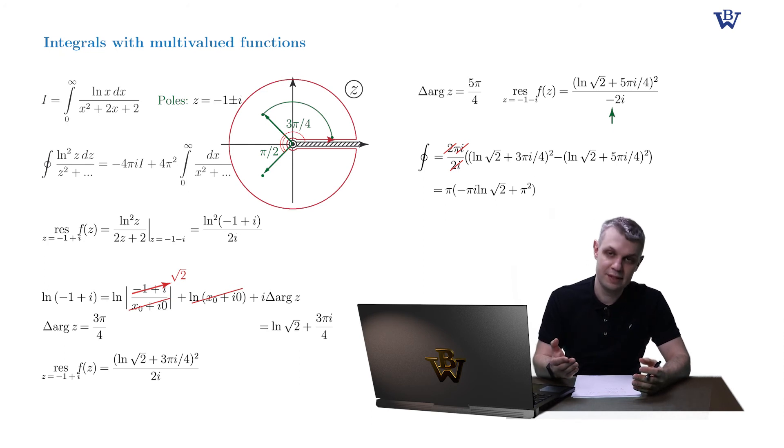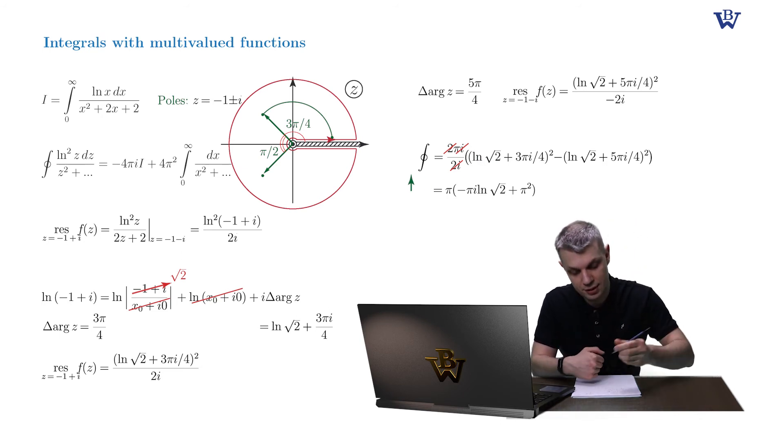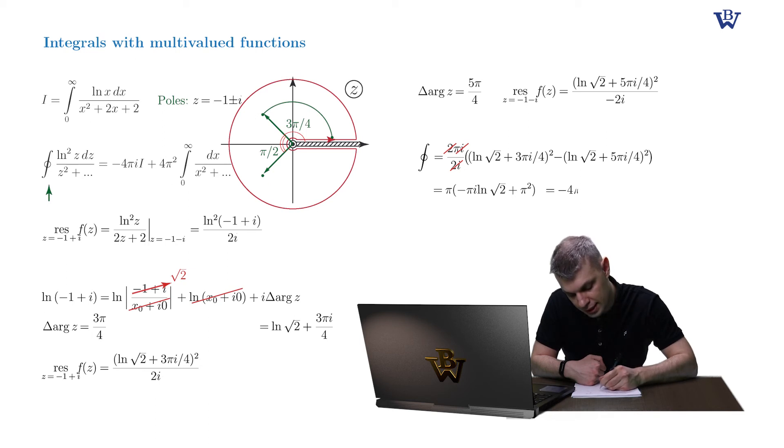And now we are ready to write down the expression of our original integral. Because we equate this closed contour integral to the expression which was obtained earlier. Minus 4 pi i times our original integral plus the remainder term.